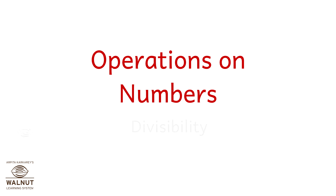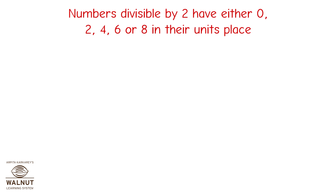Operations on Numbers. Divisibility. Numbers divisible by 2 have either 0, 2, 4, 6, or 8 in their unit's place. This is the divisibility test for 2: the last digit of the number has to be one of the following: 0, 2, 4, 6, or 8.